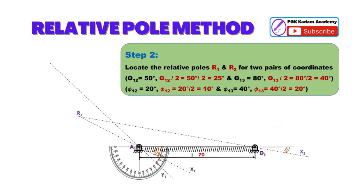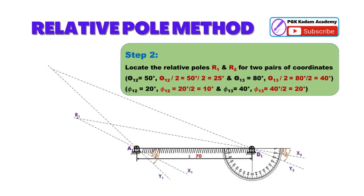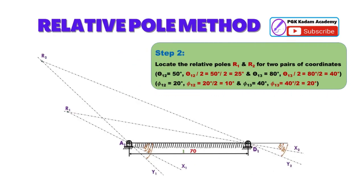Similarly, draw line Y1 passing through A1 with an angle phi 1-2 by 2 equal to 20 degrees by 2 equal to 10 degrees. Draw another line Y2 passing through D1 with an angle phi 1-3 by 2 equal to 40 degrees by 2 equal to 20 degrees. Locate second relative pole R2 at intersection of line Y1 and line Y2 shown in the figure.